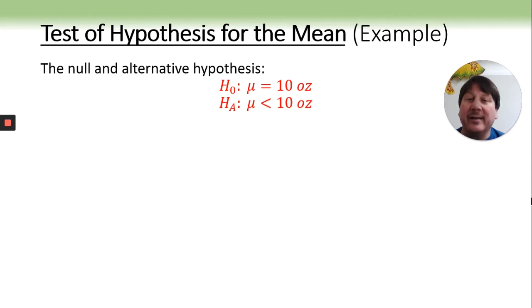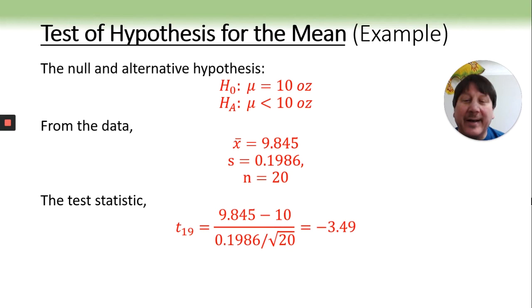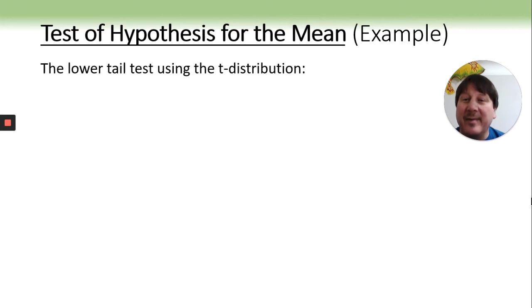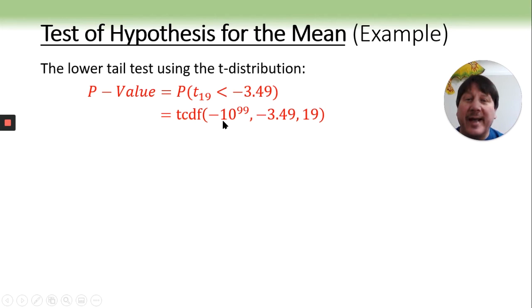They gave us data, so we're going to do this from the data. You can do it by doing one variable stats and coming up with X bar and S and calculating out your test statistic by hand. And then looking it up on the table or using the calculator. A lower tail, so we're going from negative infinity up to our t-value with 19 degrees of freedom. And it gives us our p-value, really small p-value.